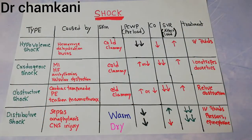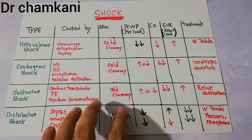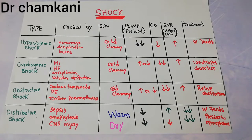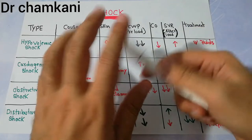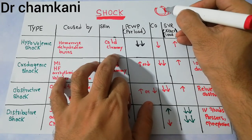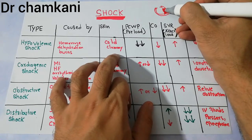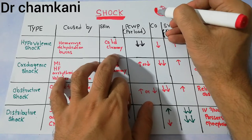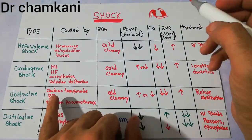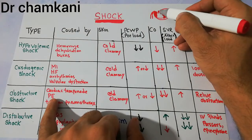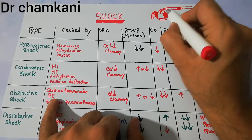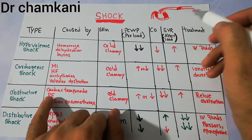In obstructive shock, the heart is normal and blood volume is normal, but there is some obstruction to the flow of blood. Causes include cardiac tamponade, in which fluid collection outside the heart presses the heart from outside and prevents blood from returning into it. Pulmonary embolism is a condition in which a thrombus is thrown out and obstructs a blood vessel, so blood cannot pass beyond the blockage.